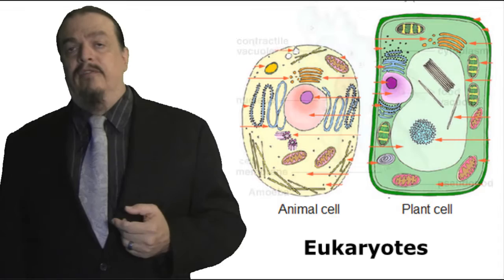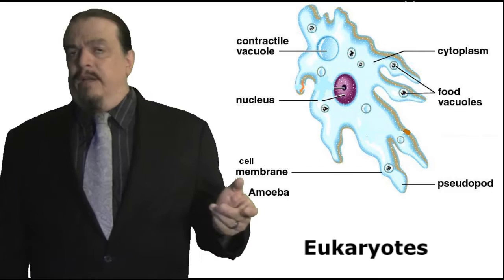In fact, if you look at a unicellular eukaryote, like an amoeba, and compare it to an animal or plant cell, you'll see that they have mostly the same organelles.